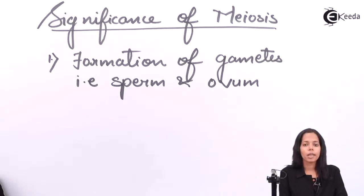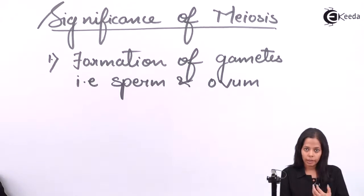The next significance is it helps to retain the number of chromosomes in next generation. Now how is it possible? Speaking about sperm and ovum: sperm contains 23 chromosomes, ovum contains 23 chromosomes.